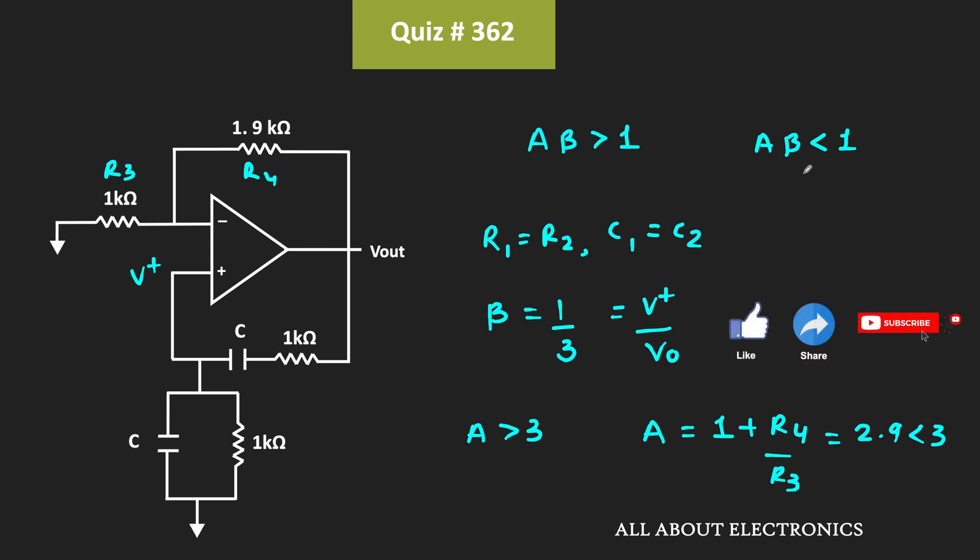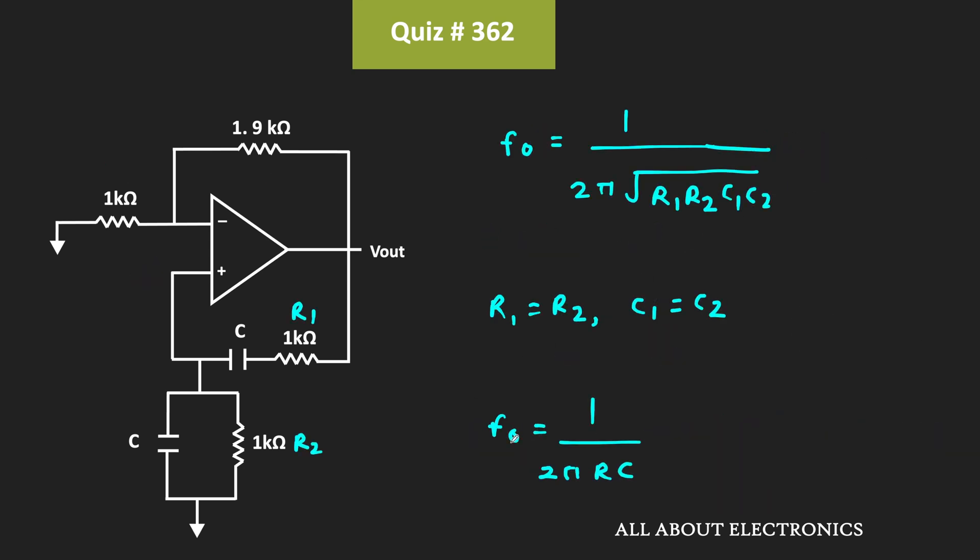Suppose if Aβ is greater than 1, in that case with the help of this equation for a 2 kHz oscillation, we can find the value of C.